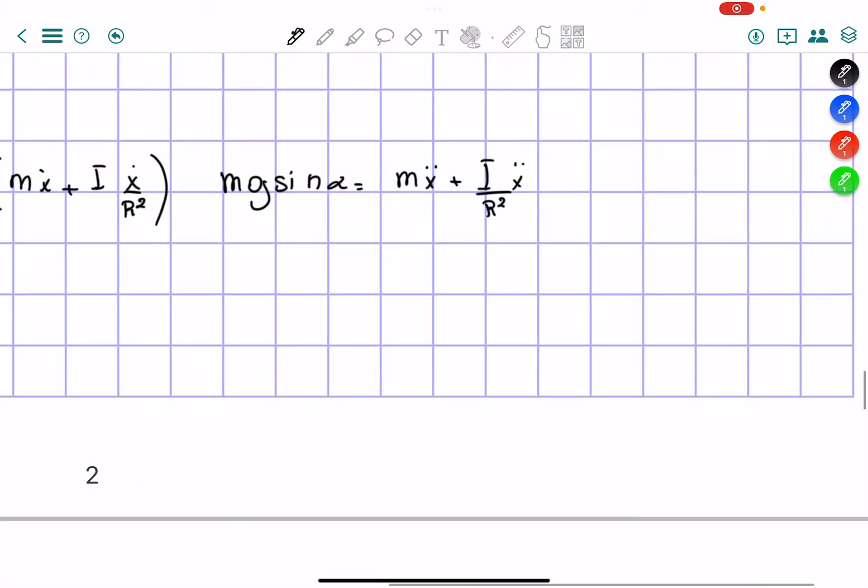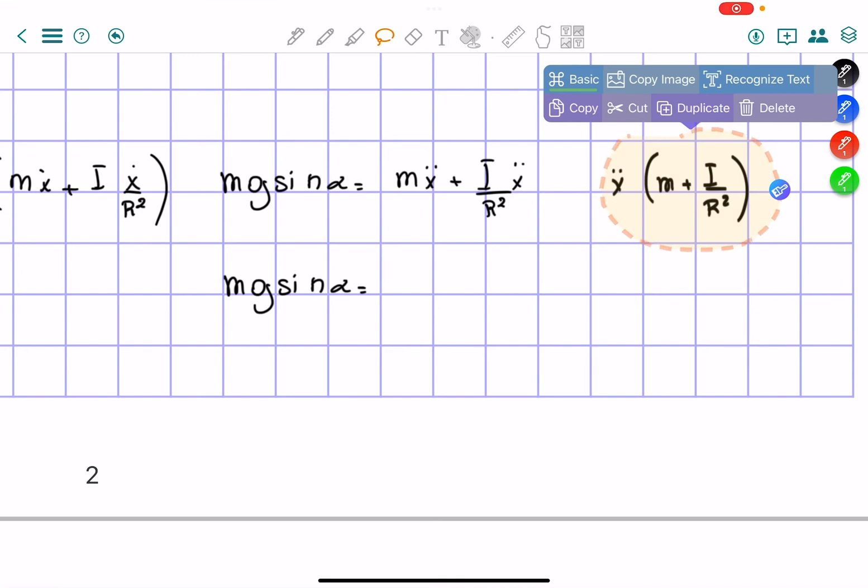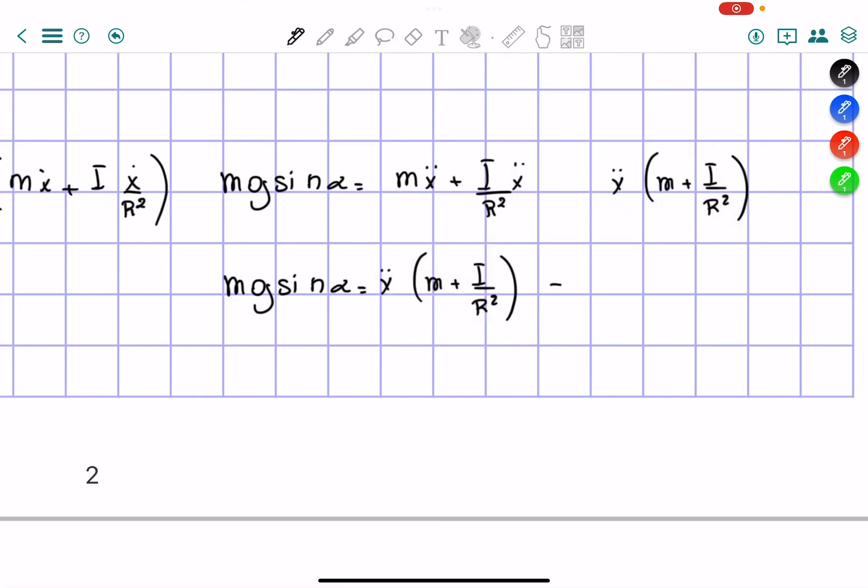So on the right side I can collect x double dot times (m + I over R squared). Therefore, x double dot equals mg sine alpha over (m + I over R squared). As you can see, that's the final solution to it.